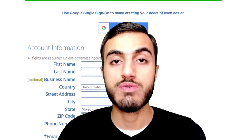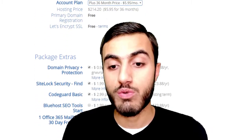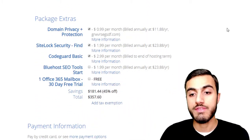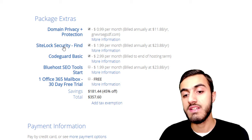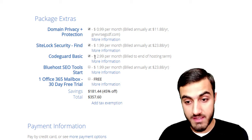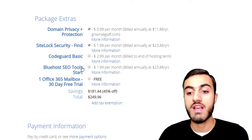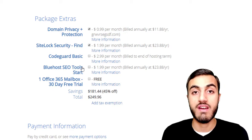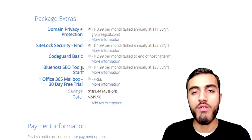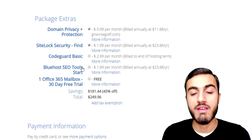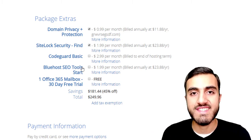I watched your video and I want to sign up with Bluehost, but how do I go through the sign-up page? Which specific package extras do you need, for example domain privacy protection? Do you really need SiteLock security? Is CodeGuard Basic something you need? Should you buy Bluehost SEO tools or find something else? You're going to discover all of that in this video about how to register your hosting with Bluehost.